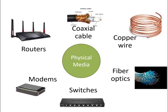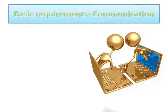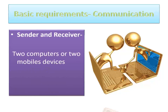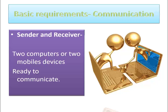On the basis of this discussion, we can say that for communication between two devices, the basic requirements are: first, sender and receiver. At least two devices which are ready to communicate, say two computers or two mobile devices, out of which one will work as the sender and the other will work as the receiver, are required.